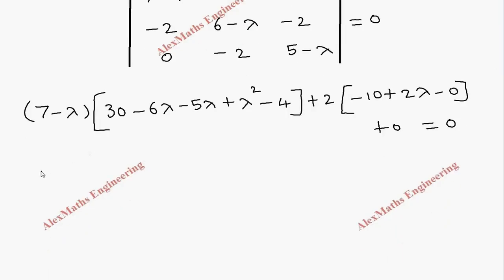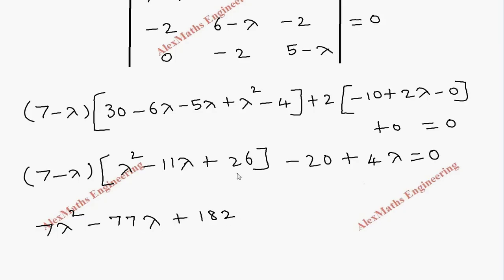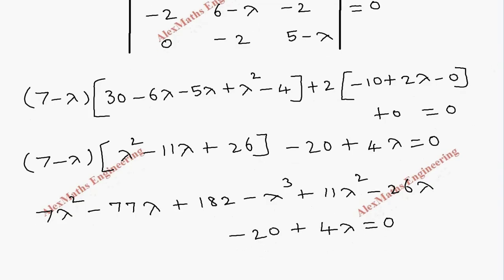Now for 7 minus lambda we collect like terms: lambda squared minus 11 lambda plus 26. Then we multiply the two inside to get minus 20 plus 4 lambda, equal to 0. Expanding: 7 lambda squared minus 77 lambda plus 182 — that is 7 times 26 — then minus lambda times gives minus lambda cubed plus 11 lambda squared minus 26 lambda, minus 20 plus 4 lambda, equal to 0.